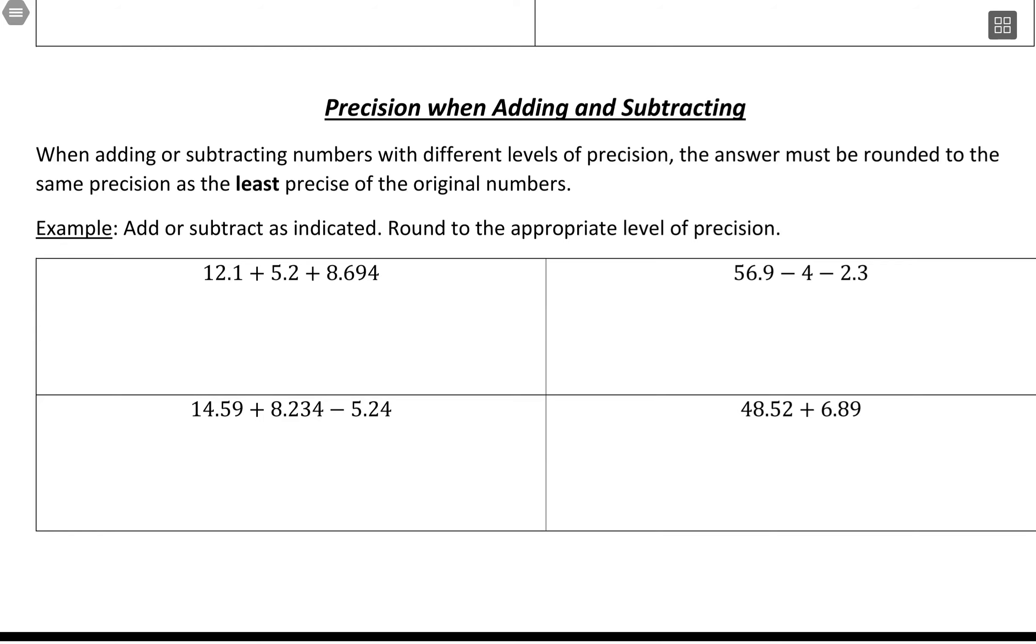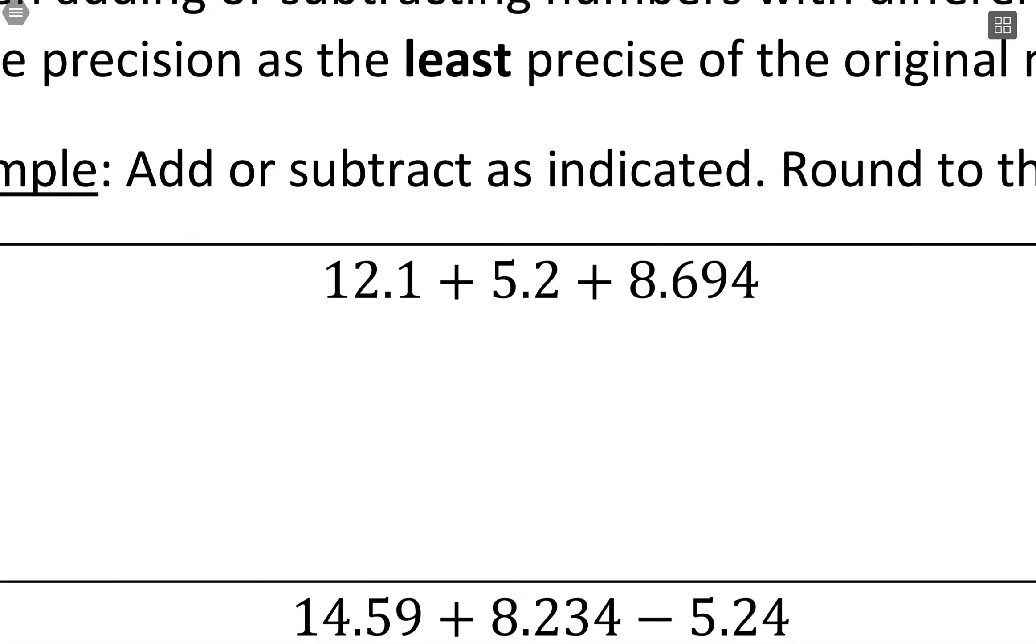For this first example here, in terms of precision, if I compare the precision of these three numbers, we have precision to the tenths place, tenths, and then tenths, hundredths, thousandths.